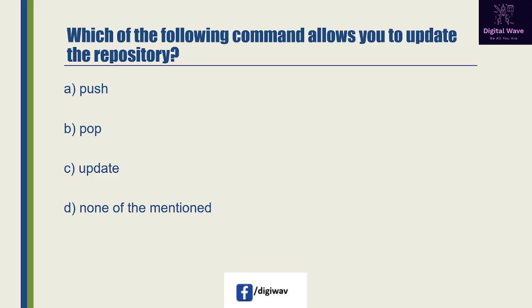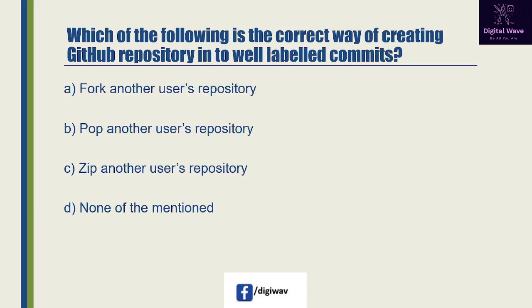Next question: which of the following command allows you to update the repository? Option A is 'push', option B is 'pop', option C is 'update', and the last option is none of the mentioned. The answer will be A, because the git branch command is your general purpose branch administration tool.